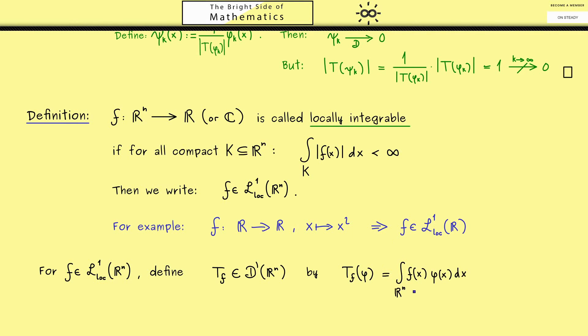This is a well-defined distribution because the integral is actually just an integral over a compact set, namely the support of phi. It is also linear and it fulfills our estimate from the beginning. This one we really should write down.